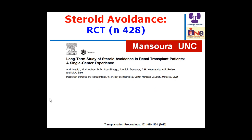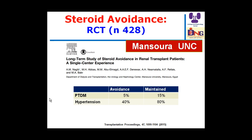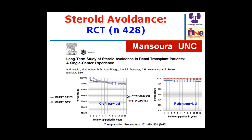Regarding steroid avoidance: our study shows that if steroid is rapidly withdrawn when tacrolimus achieves therapeutic level, diabetes is diagnosed in 5% of cases, compared to 15% if steroid is maintained. Avoiding steroids reduces diabetes to one-third without affecting graft or patient survival. These data favor steroid withdrawal in low immunological risk patients.